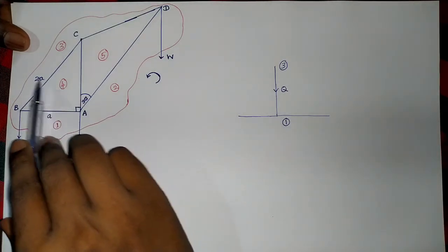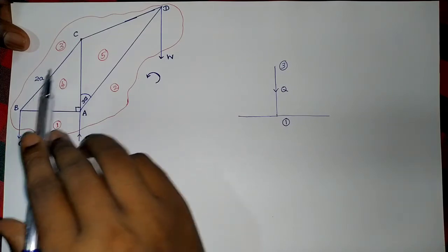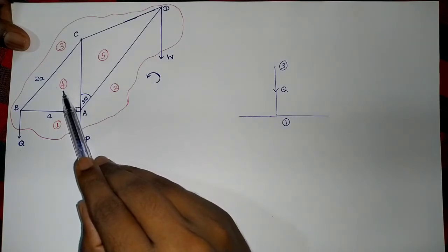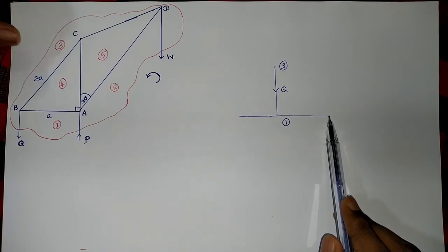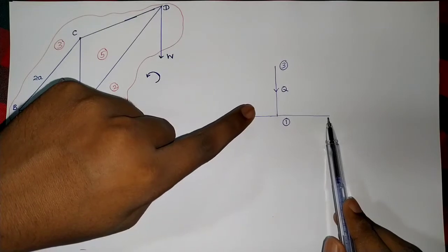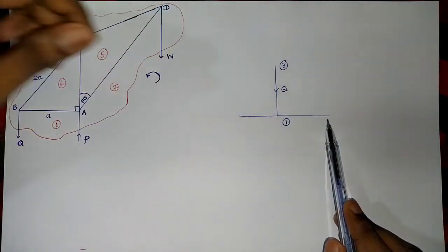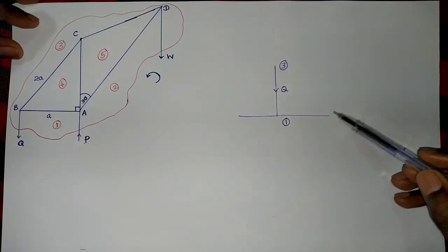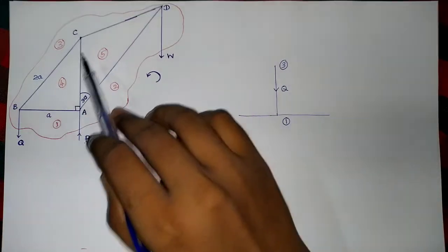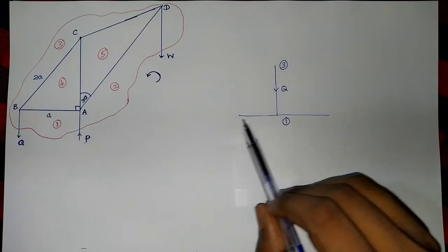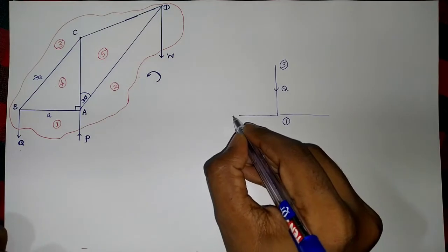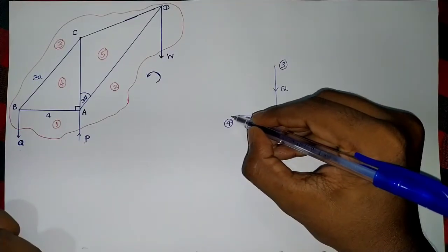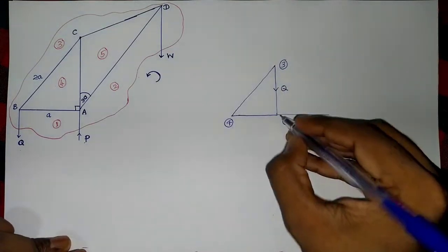The next shift is from four to three. If I mark point four somewhere here, can I reach region three moving in that direction? No. That means point four must be marked on the left-hand side. So somewhere here I can mark point four. According to the direction of the third force, I can then meet point three. This angle is 90 degrees.